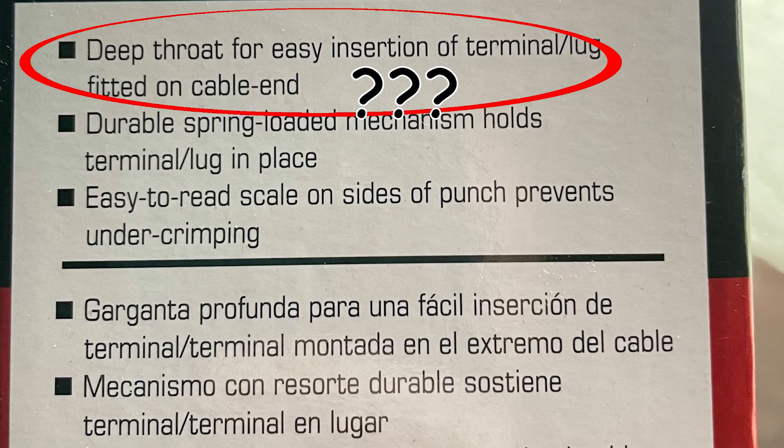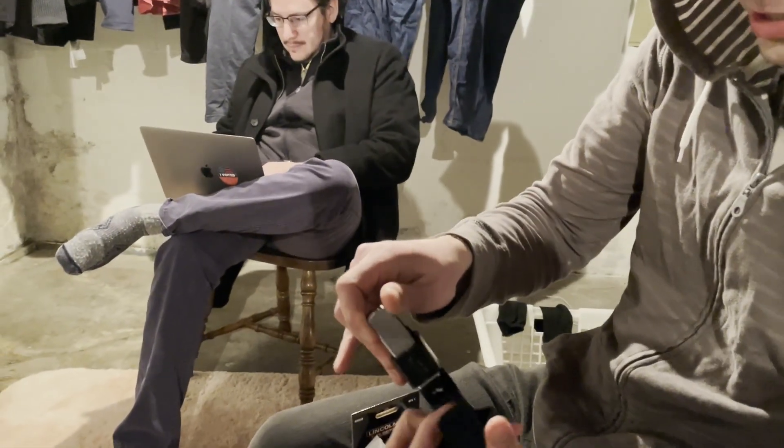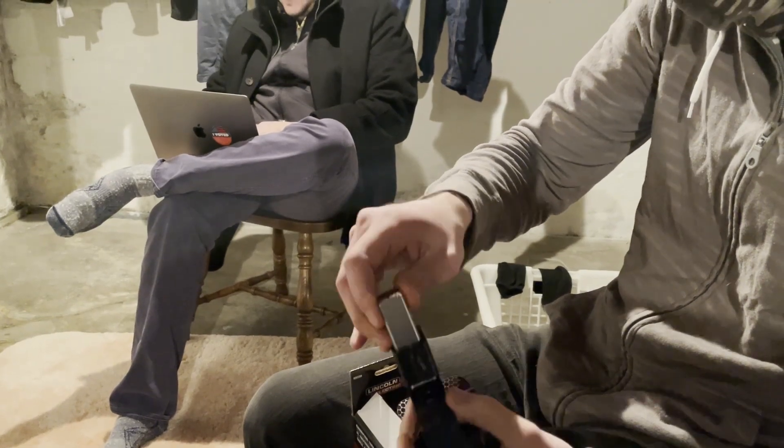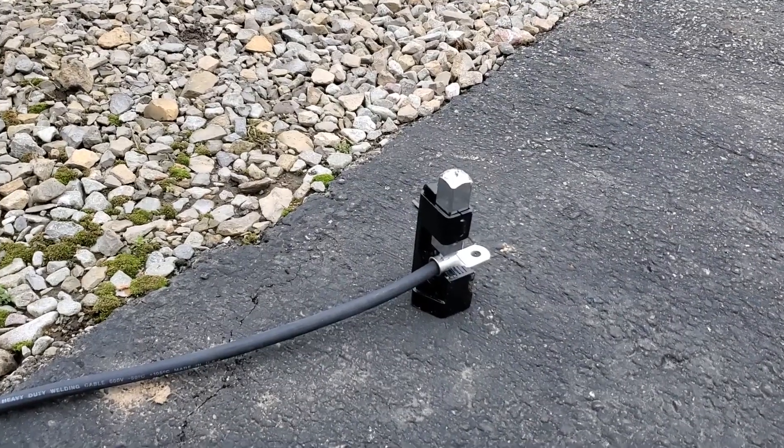I haven't used this yet. My understanding is you have this lug here, put it on the end of the cable, then you put it in here, align it, and hit it with a sledgehammer. Come over to the crimping bench. We just put the wire into the lug.